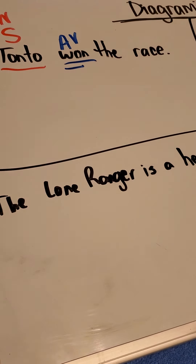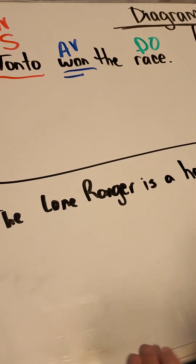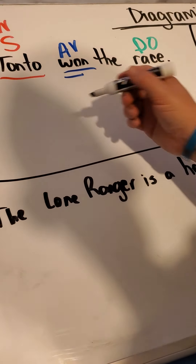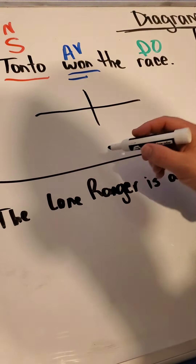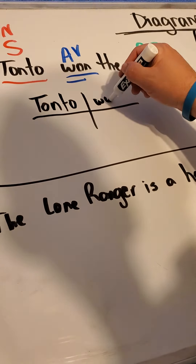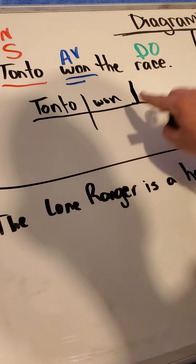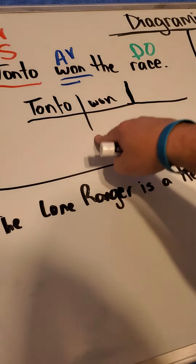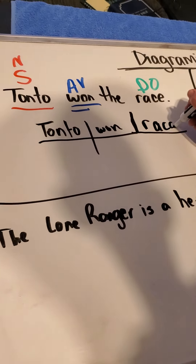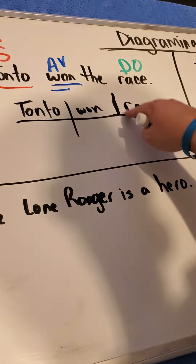Tonto won what? He won the race. Race is the direct object — it answers who or what after the action verb. Now I need to diagram it. Always I'm going to start with the T. Tonto is my subject, won is the verb. The direct object is diagrammed on the same straight line, except this line comes all the way through; the direct object line does not. Race goes there, and 'the' comes right here. Tonto won the race.